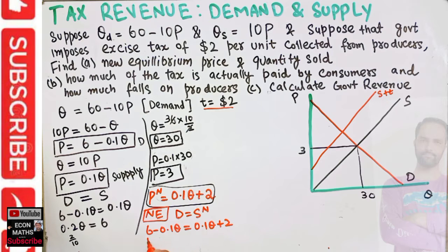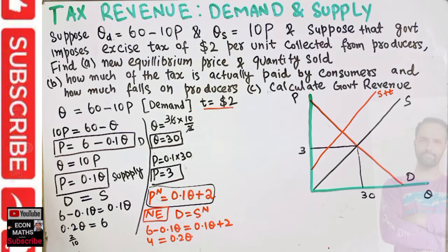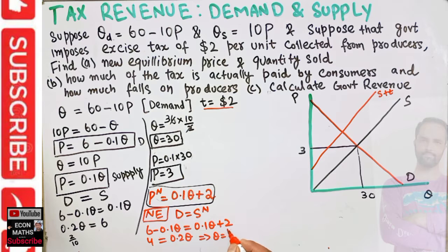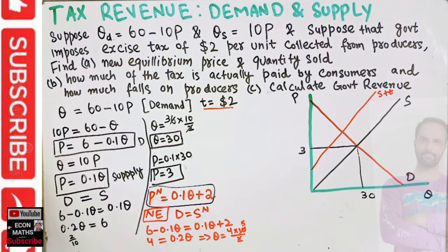Solving for q: transposing 2 gives 6 minus 2 equals 4, and combining the q terms gives 0.2q equals 4. So q equals 4 divided by 0.2, which equals 4 times (10/2) = 20.